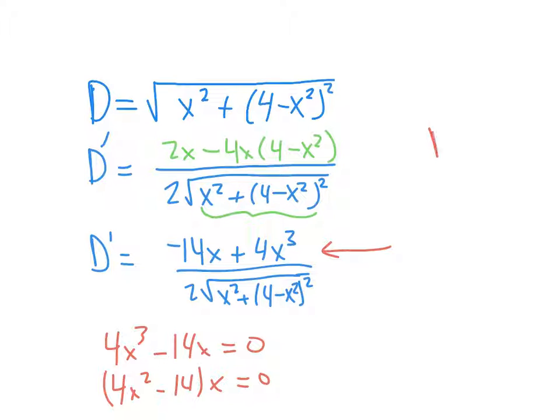So one of my critical points is 0. We don't want to throw out 0. That just means our closest point might be on the y-axis. It might be (0, 5). And then the other critical points are going to be when 4x² - 14 = 0. And so that's going to be minus 14 divided by 4, take the square root. x is going to be plus or minus square root of 14 over the square root of 4, which is 2. So I really have three critical points. I have 0, I have negative √14 over 2, and I have positive √14 over 2.